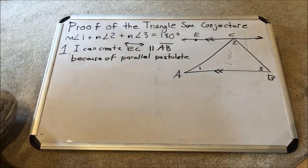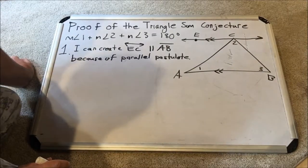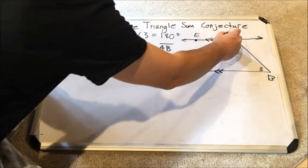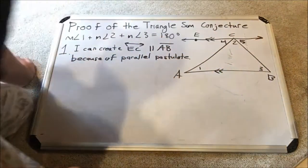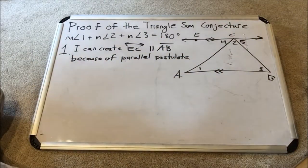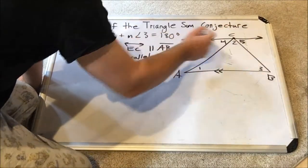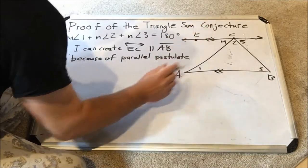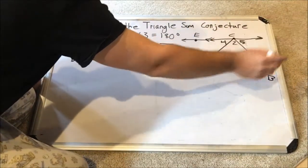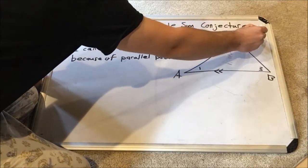Now by doing this, I create two more angles. This angle I shall call angle 4, and this one I shall call angle 5. Now let's look at all this stuff going around point C. Angle ECA, angle ACB, and angle BCG.